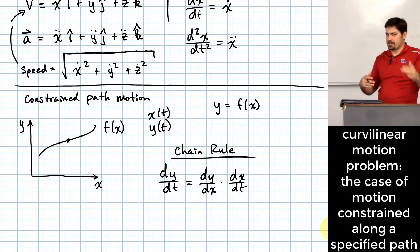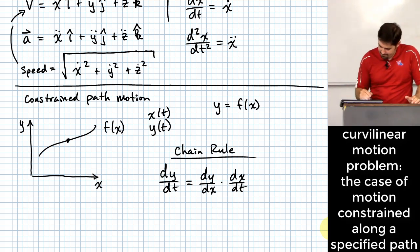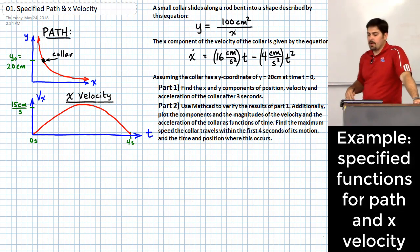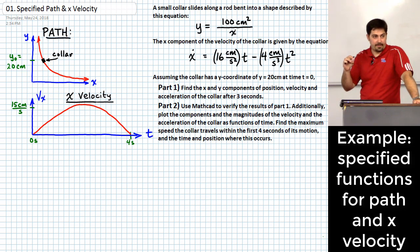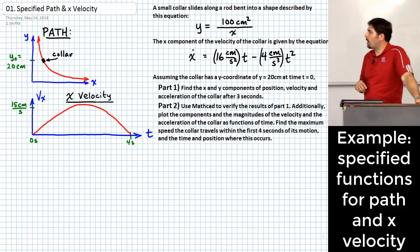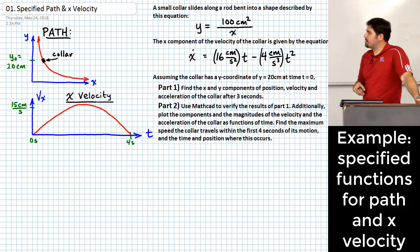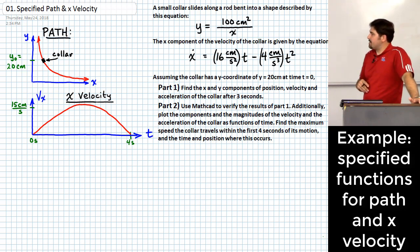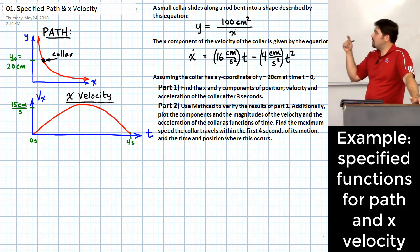Now let's do an example problem. We have a collar sliding on a rod that is bent into a shape described by the function y = 100 cm²/x. Something gives this collar a specific velocity in the x direction described by the function: Vₓ = 16 cm/s² · t − 4 cm/s³ · t². The collar starts at a height of 20 centimeters at time zero.